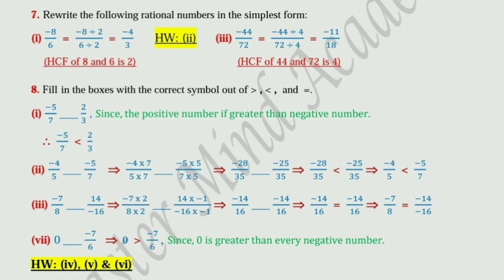Now try to solve the second one by yourself. Sum number 8: fill in the boxes with the correct symbol out of greater than, less than, and equal to. First one: minus 5 upon 7 and 2 upon 3. Since the positive number is greater than the negative number, therefore minus 5 upon 7 is less than 2 upon 3.